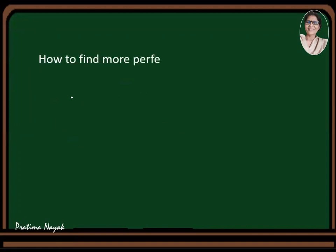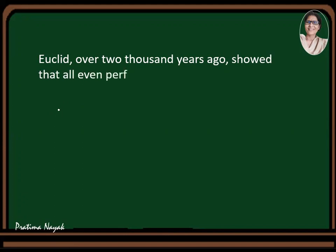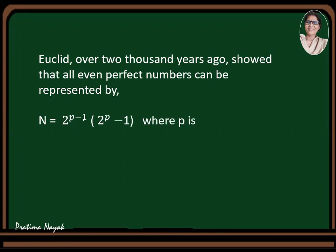How to find more perfect numbers? So let us discuss a formula by which we can get perfect numbers. Euclid, the mathematician over 2000 years ago, showed that all even perfect numbers can be represented by n is equal to 2 raised to the power p minus 1, times 2 to the power p minus 1, where p is a prime. This will be an even perfect number.